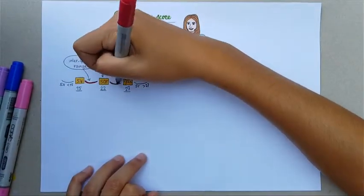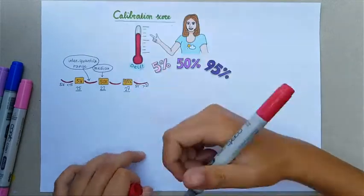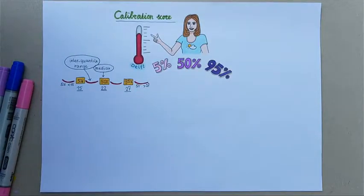One up to the 5% quantile, one from the 5% to the 50% quantile, one from the 50% up to the 95% quantile, and the fourth one from the 95% quantile onwards.